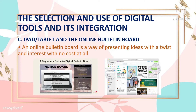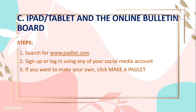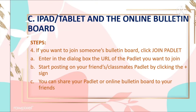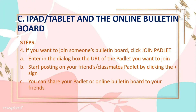An online bulletin board is a way of presenting ideas with a twist and interest at no cost at all. Steps: 1. Search for www.padlet.com. 2. Sign up or log in using any of your social media accounts. 3. If you want to make your own, click 'Make a Padlet'. 4. If you want to join someone's bulletin board, click 'Join Padlet' and enter the URL of the Padlet you want to join. 5. Start posting on your classmates' Padlet by clicking the plus sign. 6. You can share your Padlet or online bulletin board with your friends.